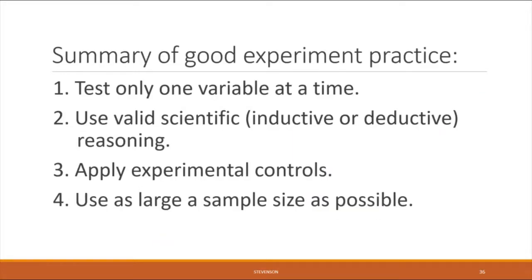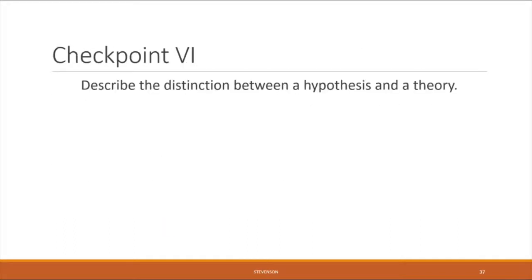To summarize good experimental practice: only test one variable at a time and keep all others constant; use valid scientific reasoning such as inductive or deductive; apply positive and negative experimental controls to determine whether instruments are working properly; and use as large a sample size as possible to get the most accurate result. Our final checkpoint: describe your understanding of the distinction between a hypothesis and a theory.